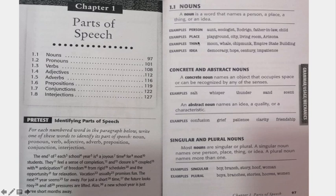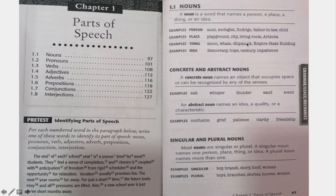For nouns referring to places, examples would be playground, city, living room, and Arizona — which is a proper noun. Living room is a kind of open compound noun, which I will explain later. For things, it could be moon, whale, chipmunk — a close compound noun — and the Empire State Building, which is a proper noun. For ideas, it could be democracy, hope, sanctuary, or impatience — things that are not tangible and cannot be sensed by our senses.